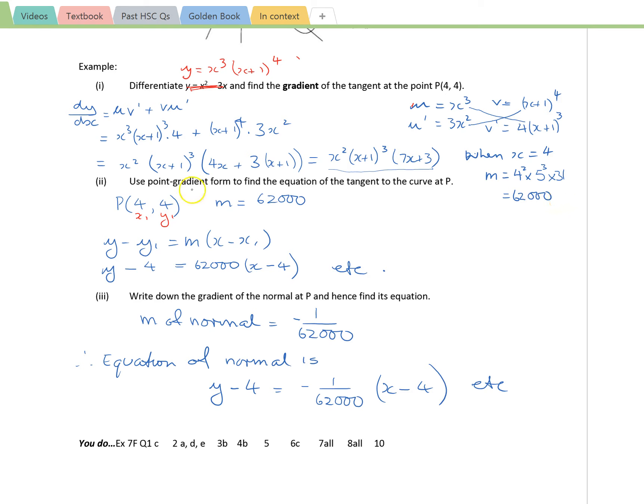Moving on, use the point gradient form to find the equation of the tangent. Point gradient, here's my point, here's the gradient. And you've done this before, y minus y1 equals m times x minus x1. I haven't gone on to simplify that,